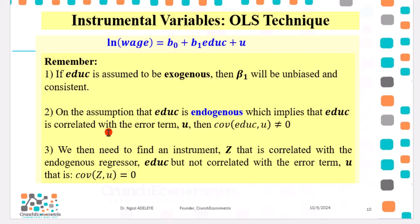But on the assumption that EDUC is endogenous, it will imply that EDUC will be correlated with the error term as seen in this covariance. The covariance will not be equal to zero. If that is the case, we will then need to find an instrument Z that is correlated with the endogenous regressor EDUC, but not correlated with the error term, such that the covariance between the instrument and the error term equals zero.